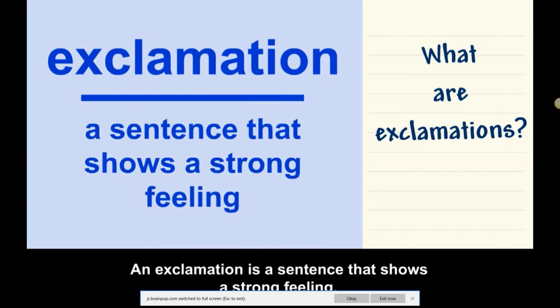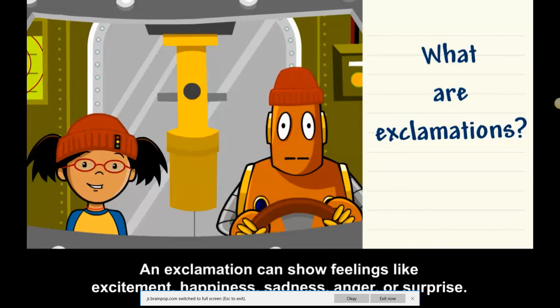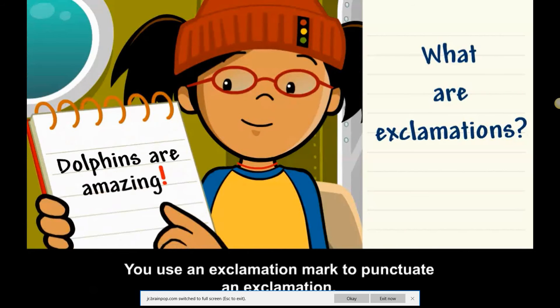An exclamation is a sentence that shows a strong feeling. An exclamation can show feelings like excitement, happiness, sadness, anger, or surprise. You use an exclamation mark to punctuate an exclamation.